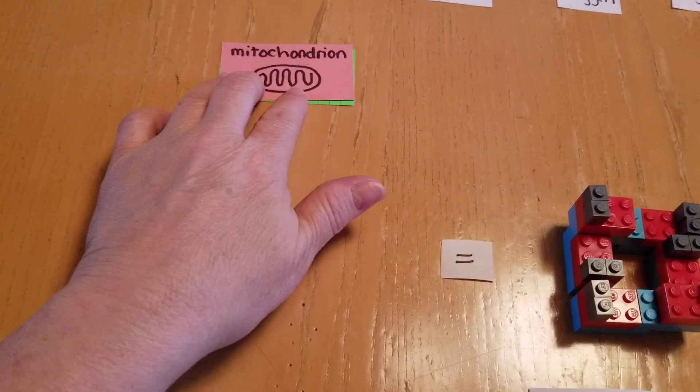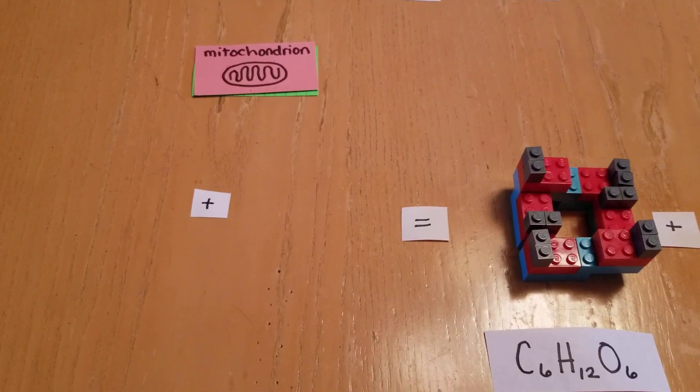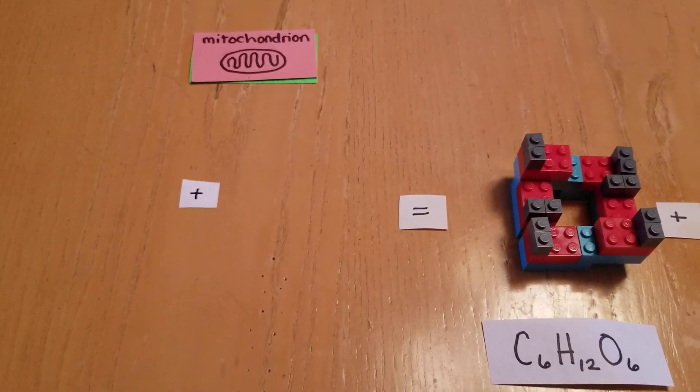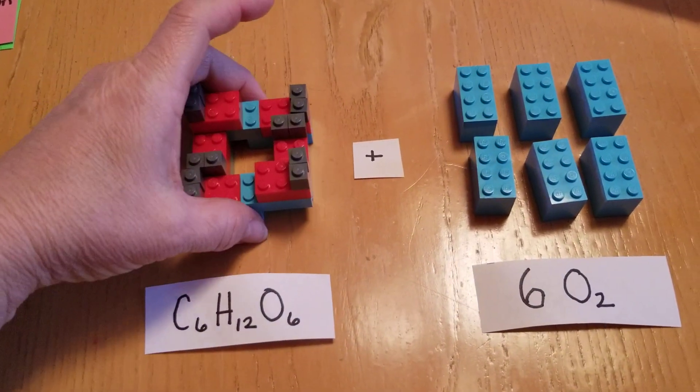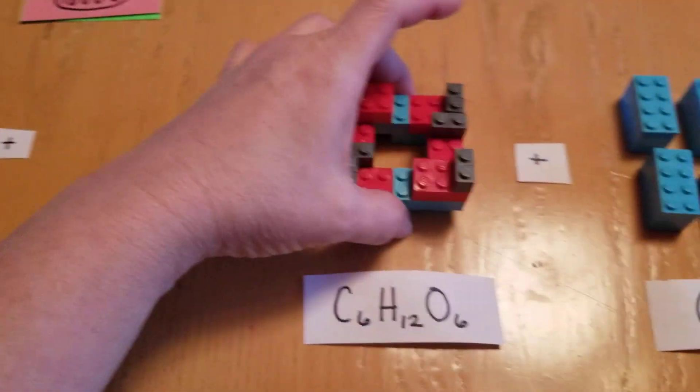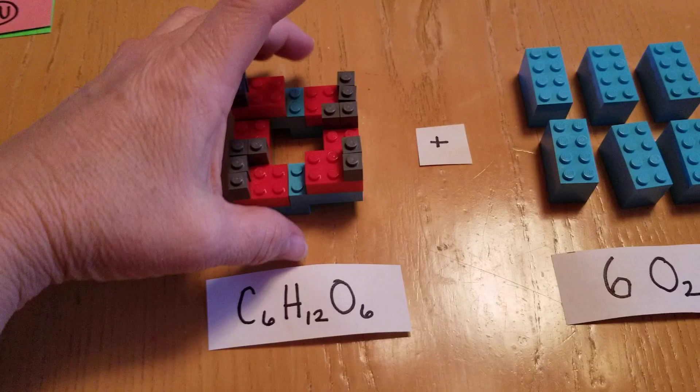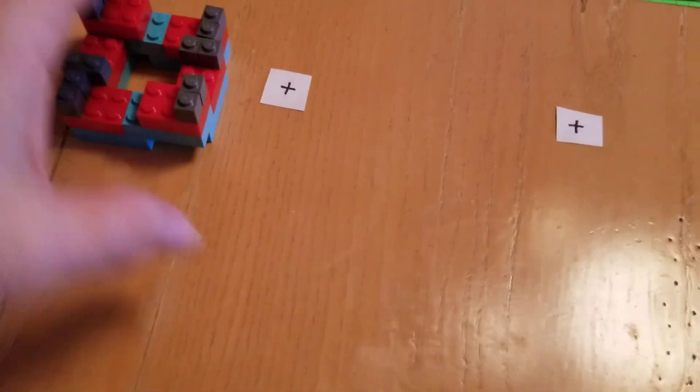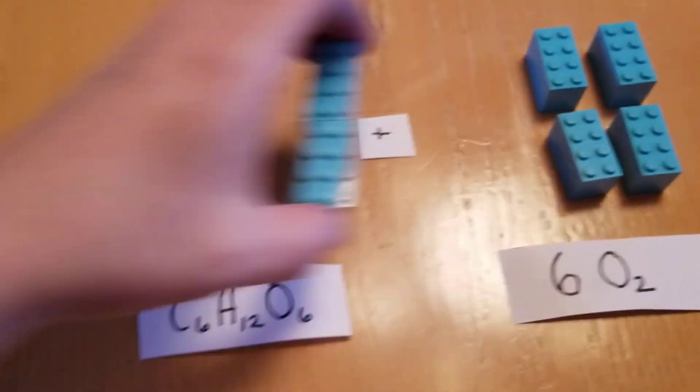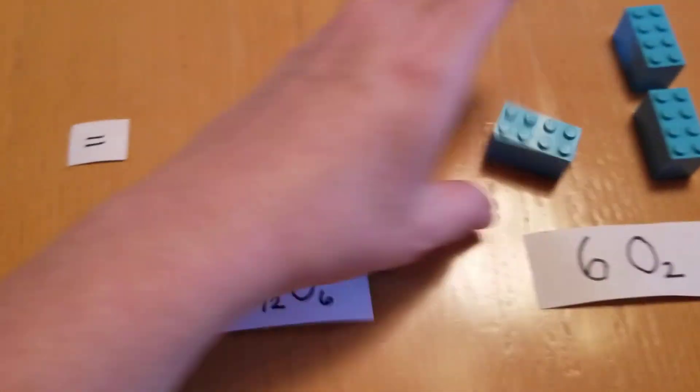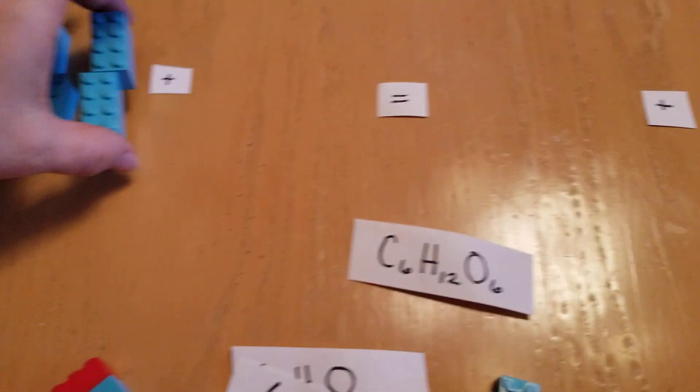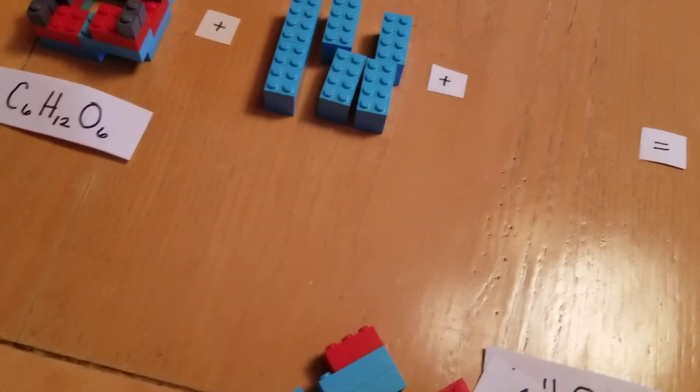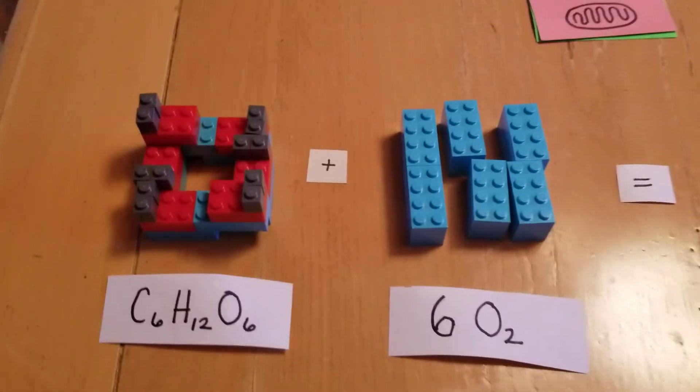First I'm going to turn over the chloroplast because now cellular respiration is going to take place in the mitochondria, and the products of photosynthesis are now the reactants of cellular respiration.